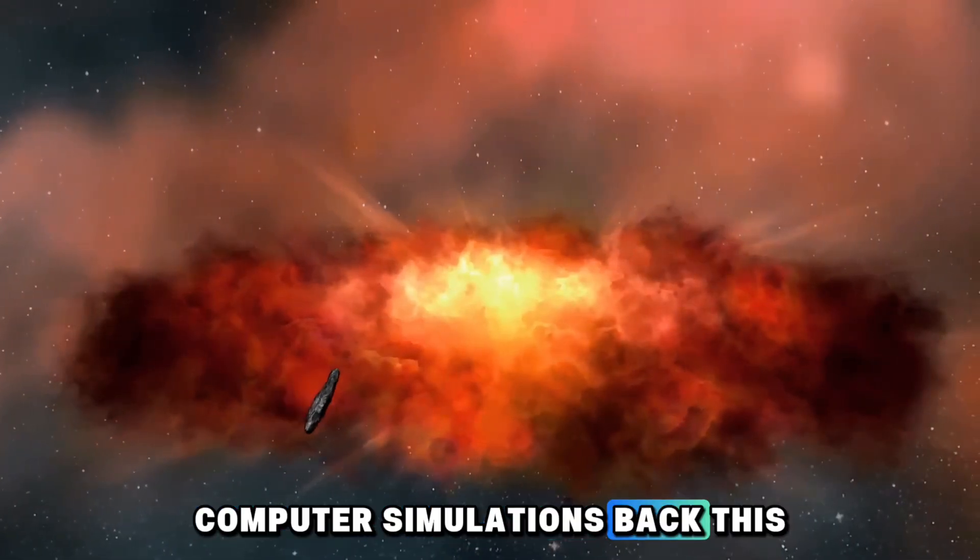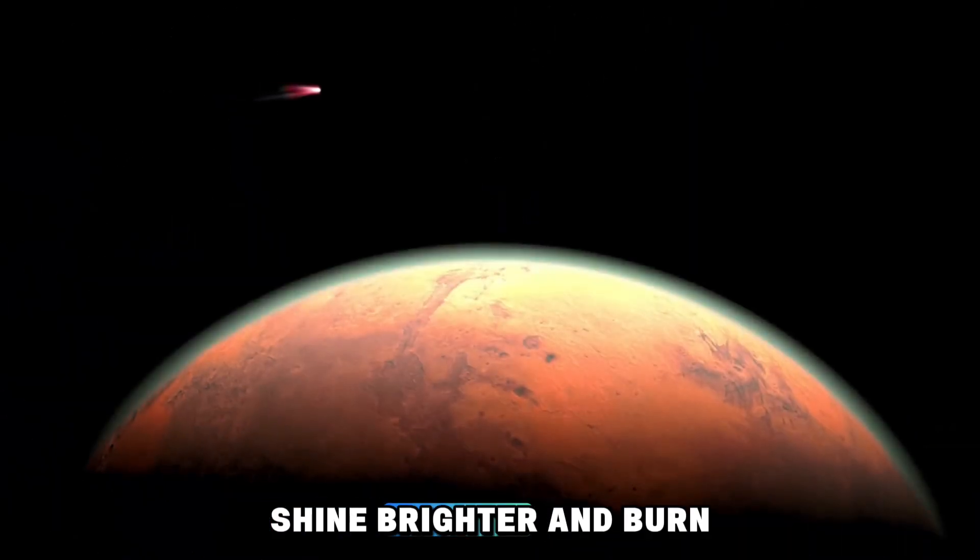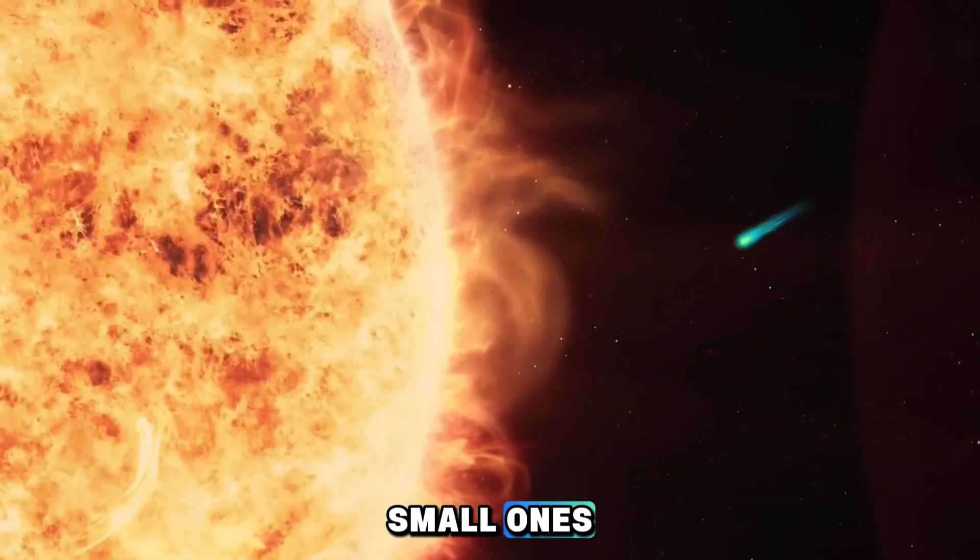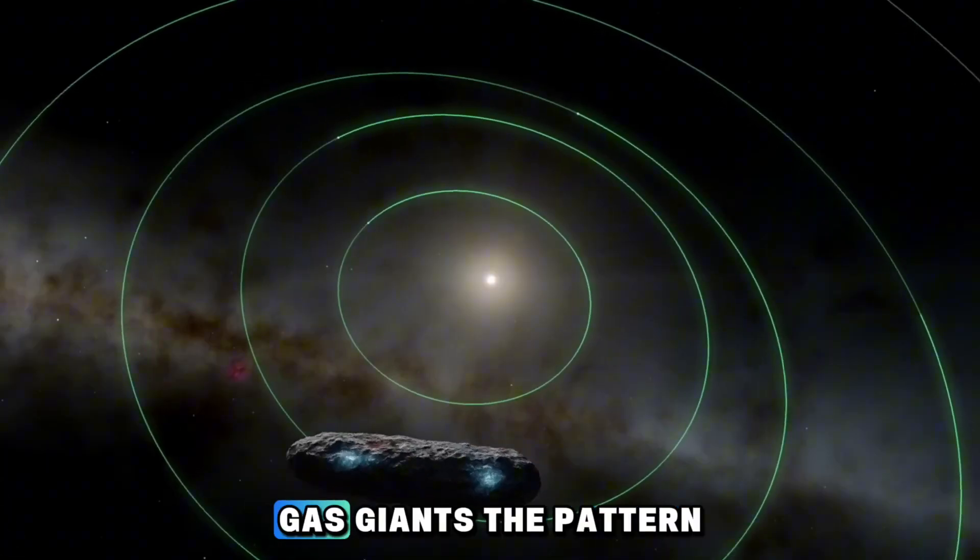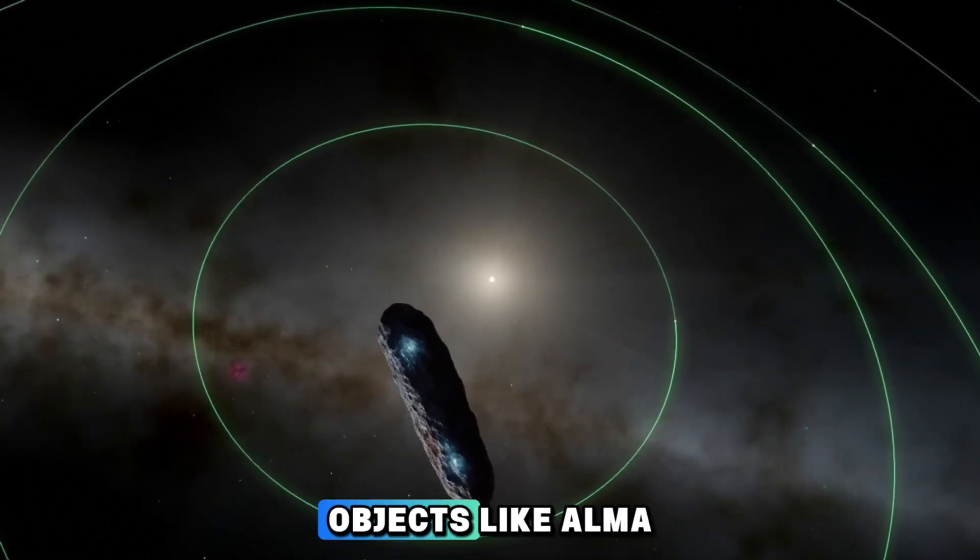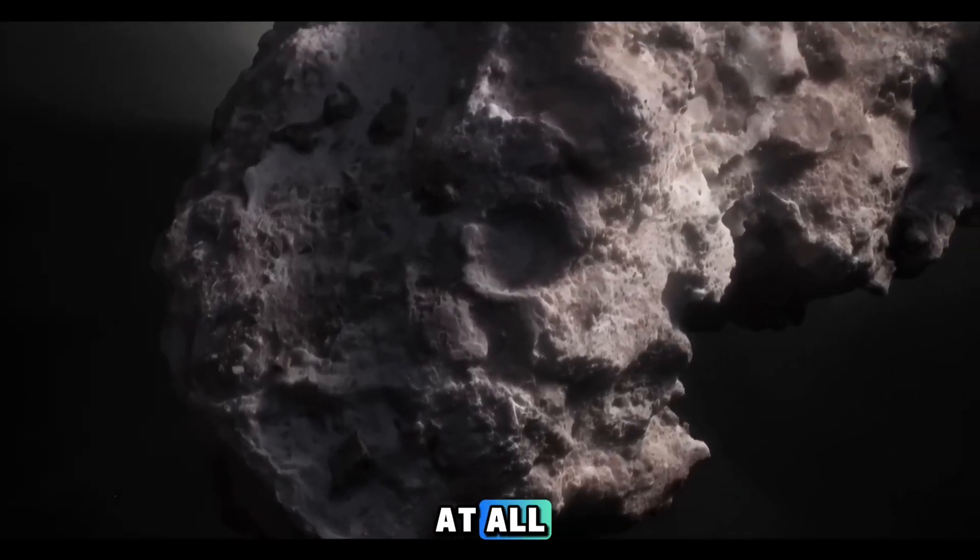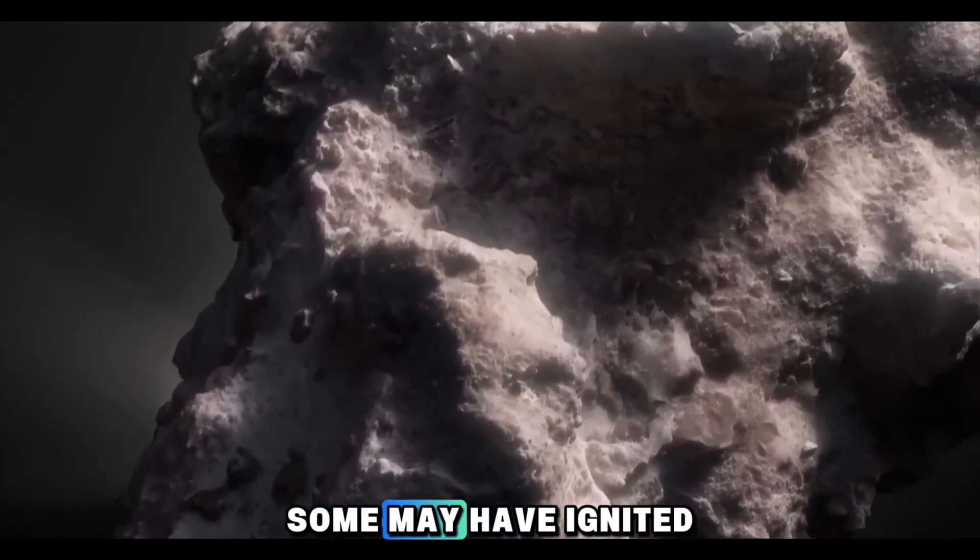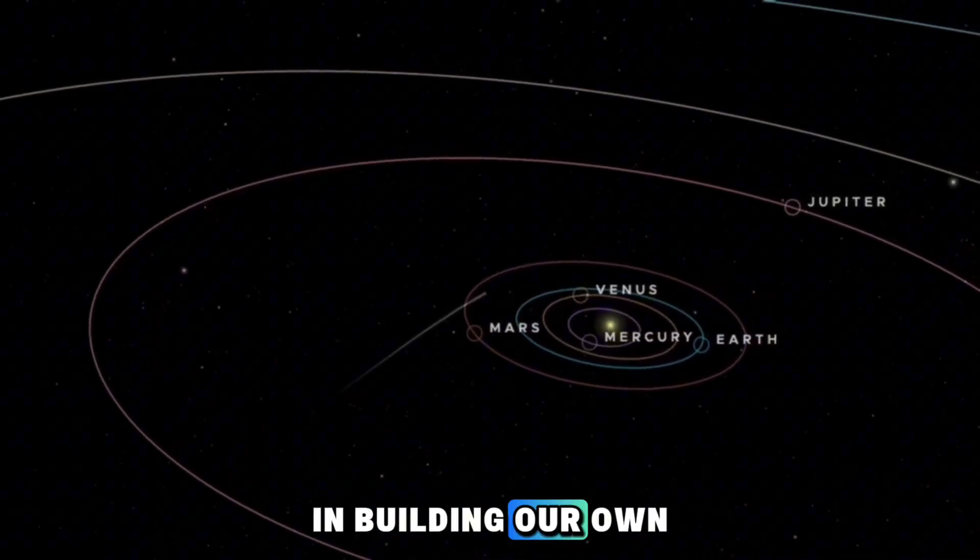Computer simulations back this up too. Nair's models show that larger stars, the ones that shine brighter and burn faster, are much better at capturing interstellar objects than small ones. And guess what? Those same large stars are also the ones surrounded by the biggest gas giants. The pattern is too perfect to ignore. If she's right, then objects like Omwamua, Borisov, and now Atlas aren't random drifters at all. They're the cosmic matchsticks that spark the birth of new solar systems. Some may have ignited worlds far across the galaxy, and some might have even played a part in building our own.